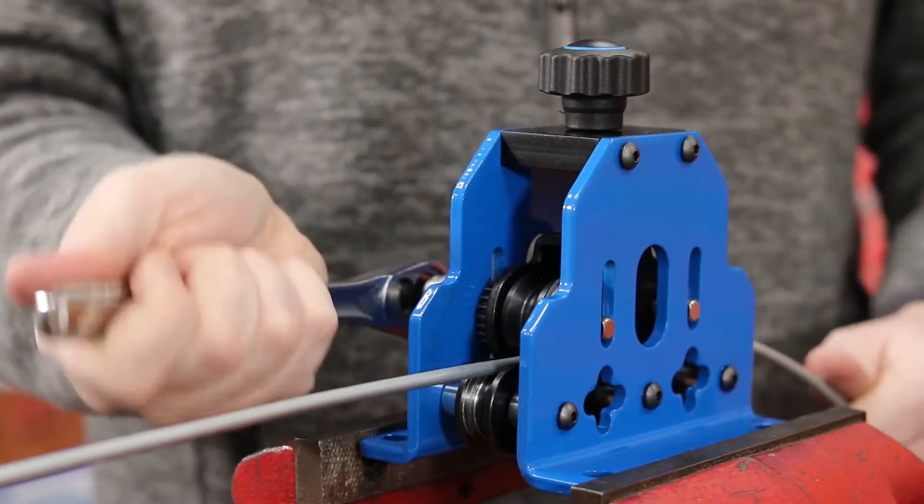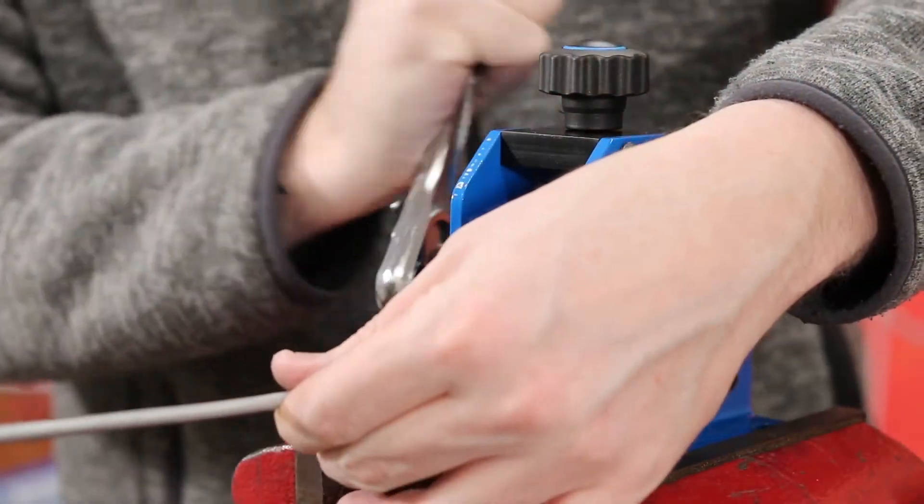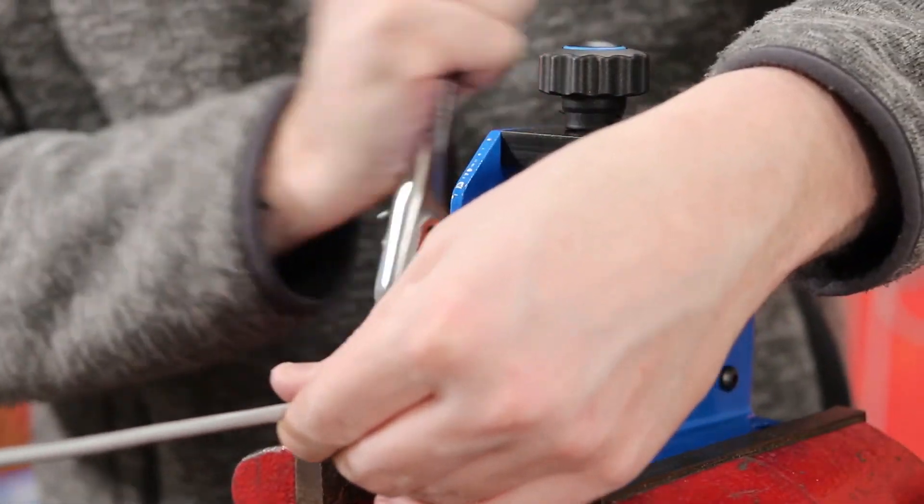Once the tubing is all the way through the straightener, repeat the previous steps. Each time the tubing passes through, it will become straighter.